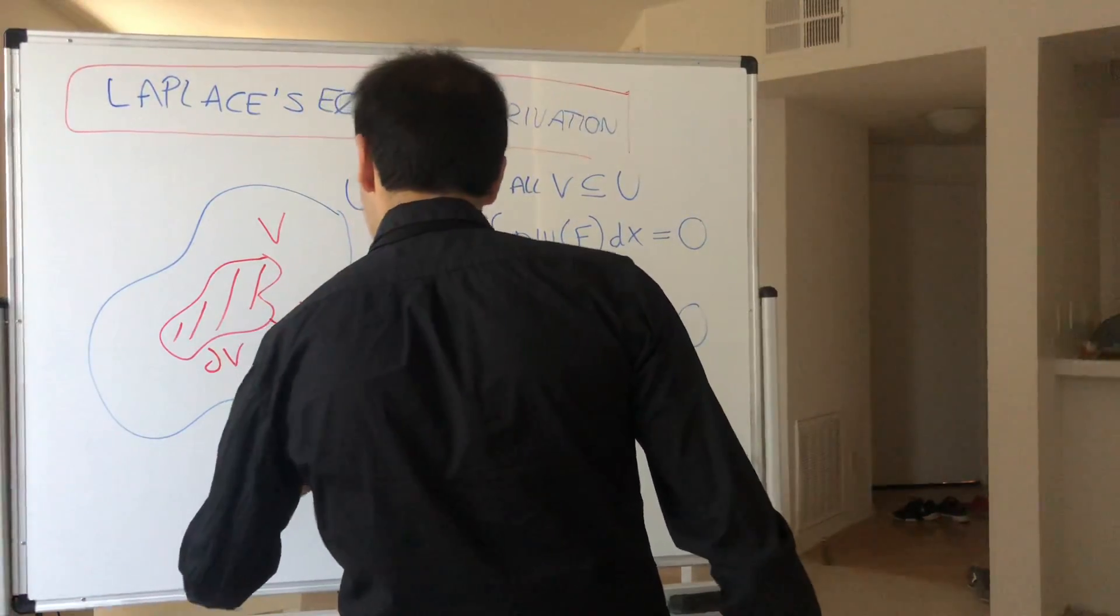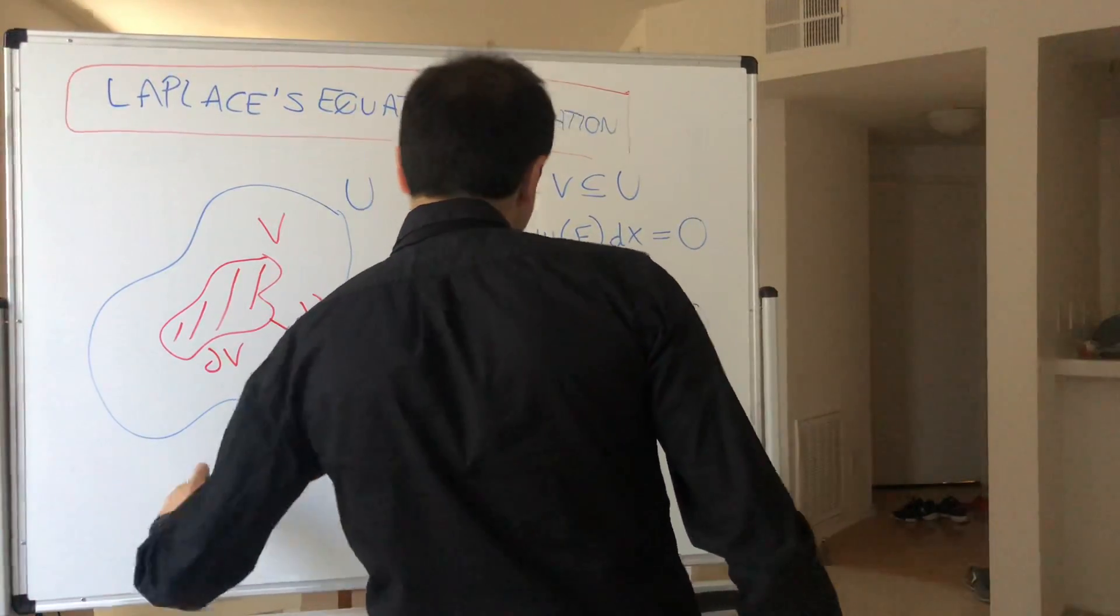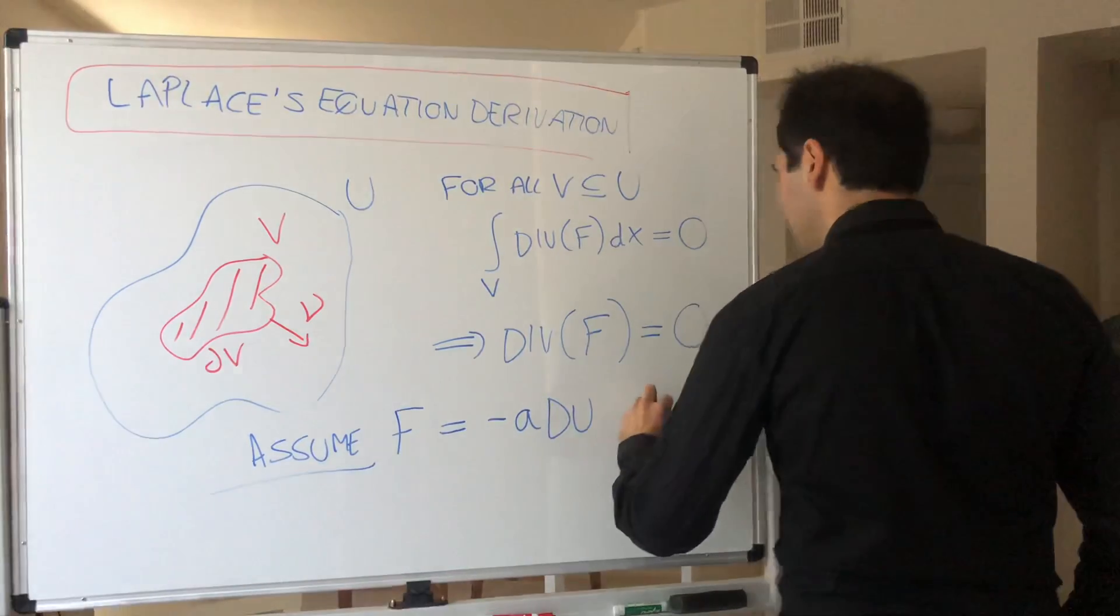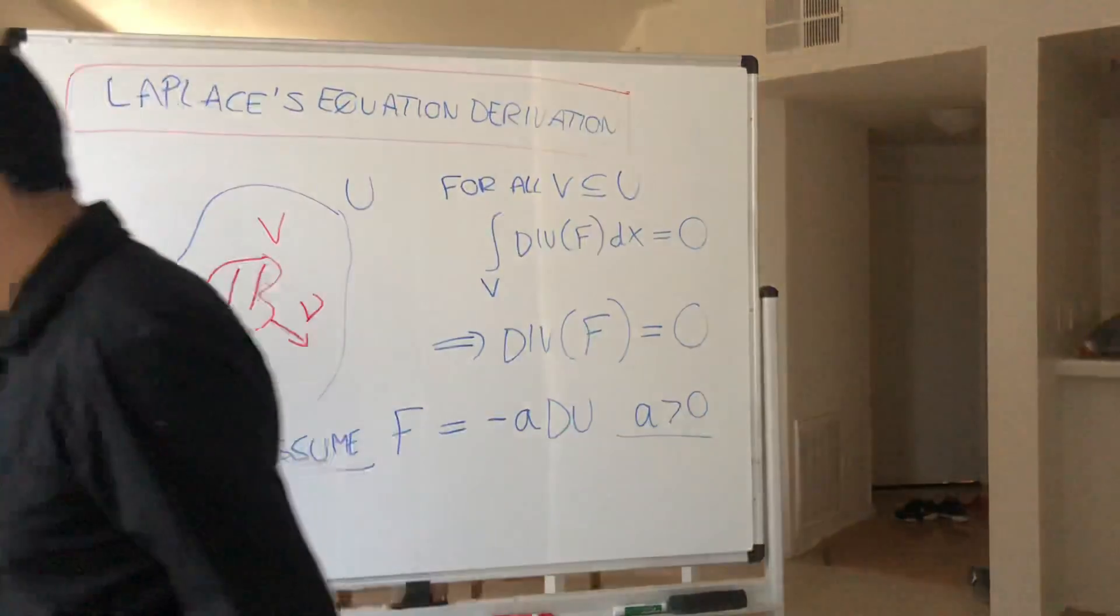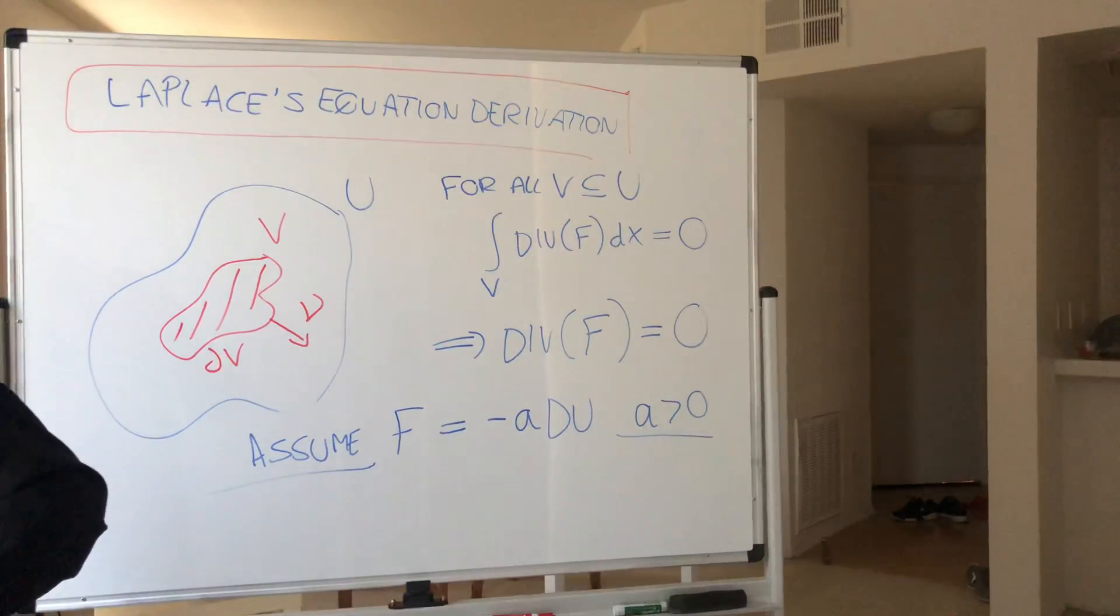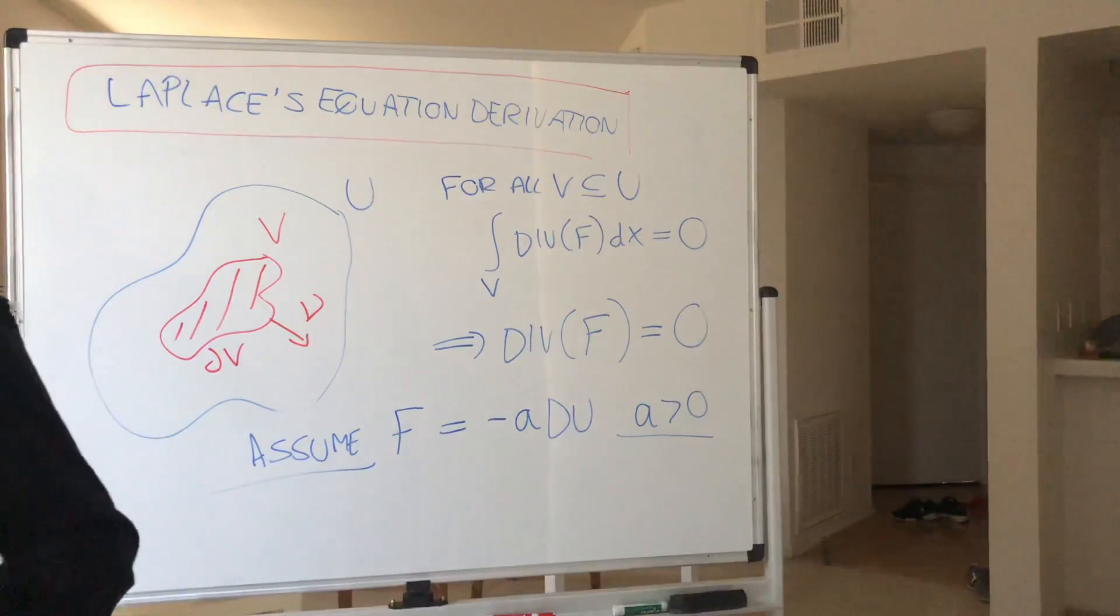So, at least in physical models, it's apparently clear to assume that F equals minus A times the gradient of U. So, assume F is minus A gradient of U, where A is positive. And in physical situations, this is, I think,